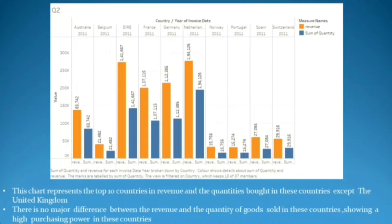This second graph, with reference to the second question, represents the top 10 countries in revenue and the quantities bought in these countries, except the United Kingdom. It also represents there is no major difference between the revenue and the quantity of goods sold in these countries, showing a high purchasing power.